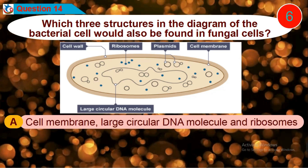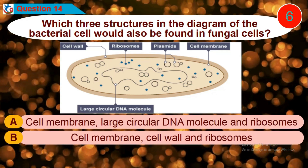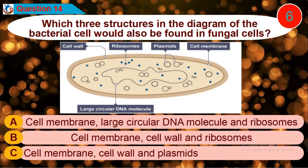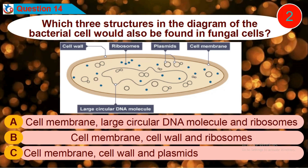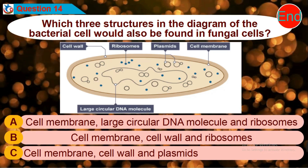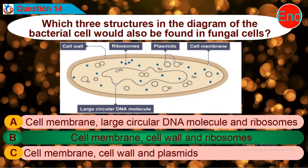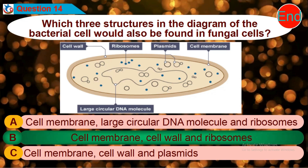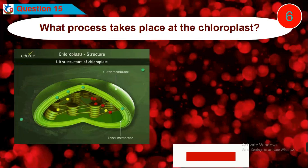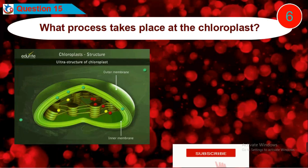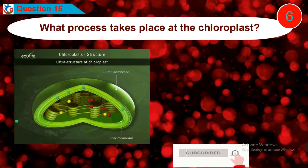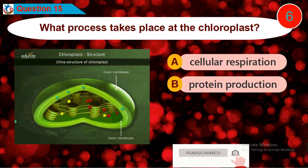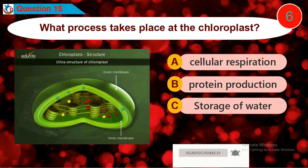Question 15: What process takes place at the chloroplast? Is it option A, B, C, or D?